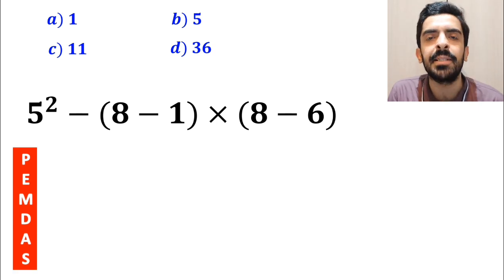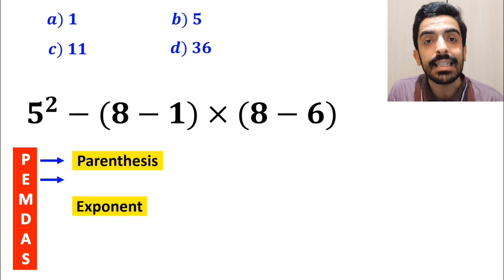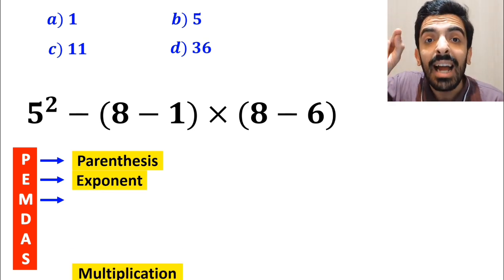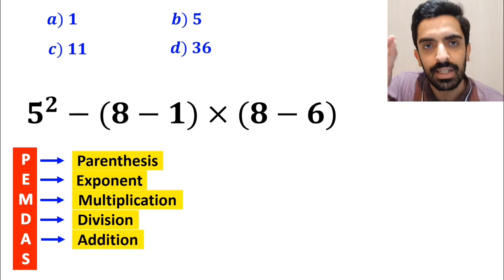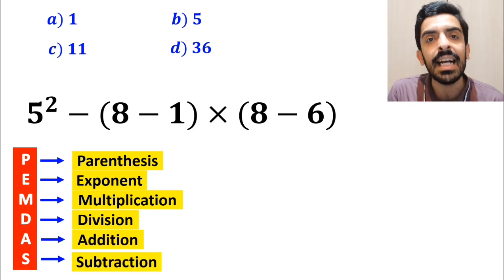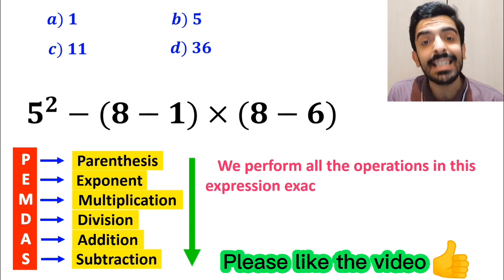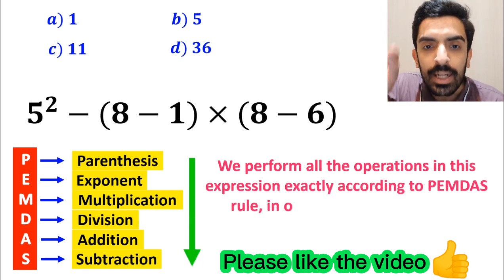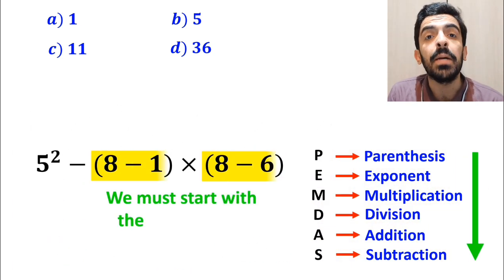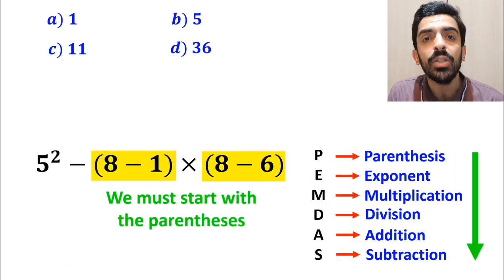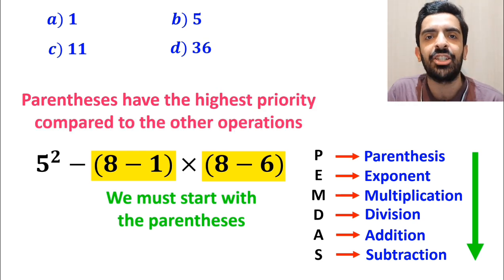To solve this question, we must strictly follow the PEMDOTS rule. In this rule, P stands for parenthesis, E stands for exponent, M stands for multiplication, D stands for division, A stands for addition, and S stands for subtraction. We must perform all the operations in this expression exactly according to the PEMDOTS rule, in order from top to bottom. So we must start with the parenthesis first, because according to the PEMDOTS rule, parenthesis have the highest priority compared to the other operations.